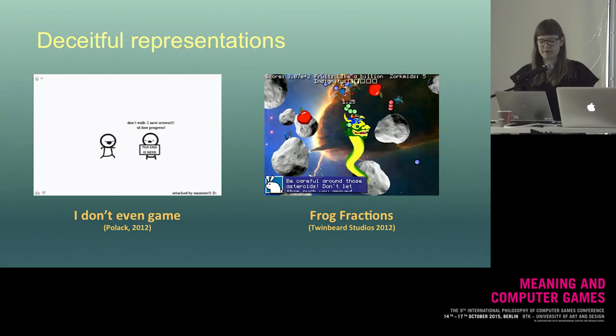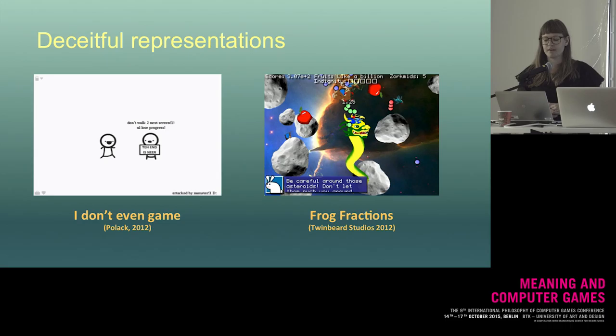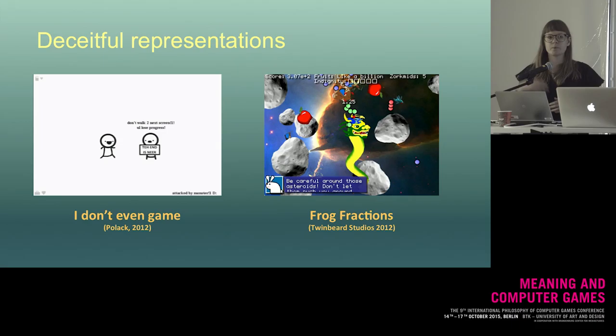The first example relates to the representational layer of the game. The player may interpret different representations and realize what she's supposed to do. But this can be very difficult if the game is filled with representational objects that deceive the player. Examples include when pure representations pose as game elements — for example, a door that we think we can open, but which turns out to be merely a decorational element.